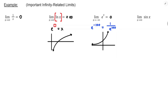The limit of sine x as x approaches infinity does not exist due to oscillation, because we're looking at whether the graph gets closer and closer to one particular value — and that's not what happens with sine x.